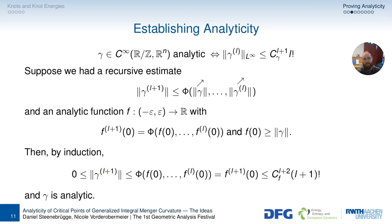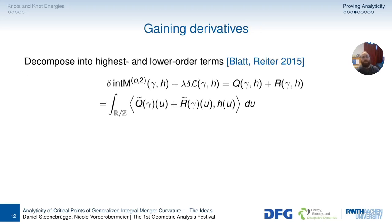But I mean, this is a tall order, this recursive estimate, and then this analytic majorant. How do we get these? The rough idea comes now. And a few more details come in the next talk. So you may want to bear with me. The first thing is gaining derivatives.